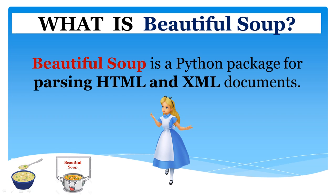That is how this Python library got its name. The image on the screen is Alice from Alice in Wonderland — so whenever you think of Beautiful Soup, you will remember where the name came from. Beautiful Soup is a Python package that helps us parse unwanted or unstructured data and helps us organize and format messy web data by fixing bad HTML and presenting it to us in an easily traversible XML structure. In short, Beautiful Soup is a Python package which allows us to pull data out of HTML and XML documents.